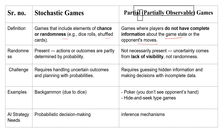Regarding Randomness: in Stochastic Games, randomness is present — actions or outcomes are partly determined by probability. In Partially Observable Games, randomness is not necessarily present; instead, uncertainty comes from lack of visibility, not from randomness. The challenge in Stochastic Games is handling uncertain outcomes and planning with probabilities, whereas in Partially Observable Games the challenge is guessing hidden information and making decisions with incomplete data.